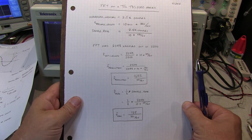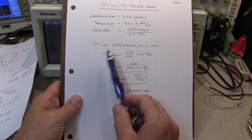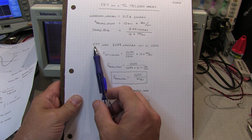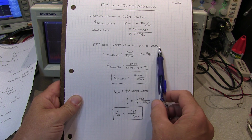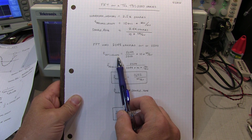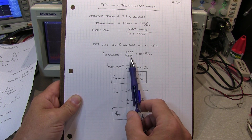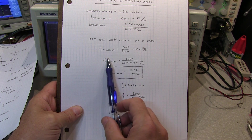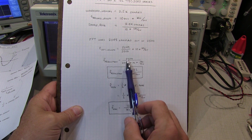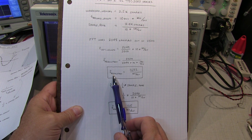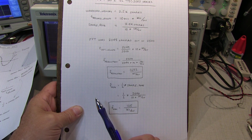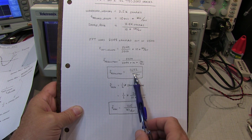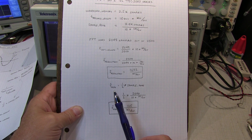The TDS 2000 uses a true FFT requiring a 2^n number of samples, so the FFT uses 2048 samples out of the 2500. The time duration of the FFT length is therefore 2048 divided by 2500, times 10 times the seconds per division. This gives a frequency resolution of one over that duration — which simplifies to 0.122 divided by the seconds per division. So if you know what frequency resolution you want, you already know what horizontal scale to set up.